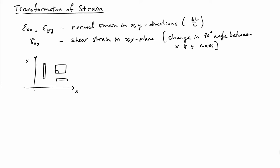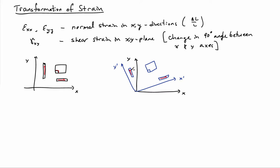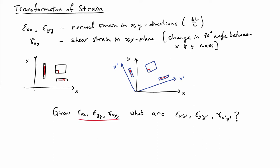Here's the basic setup. I have the x direction with the normal strain in the x direction and the normal strain in the y direction, and then the shear strain in the xy plane — that's the change in this 90 degree angle between the x and y axes. Now I'd like to consider what would happen if I rotated the coordinate system and was looking in the x prime and y prime directions: the normal strain in x prime, the normal strain in y prime, and what happens to this 90 degree angle between the x prime and y prime coordinate axes. So, given these three strain components in xy, what are the three strain components in x prime y prime?